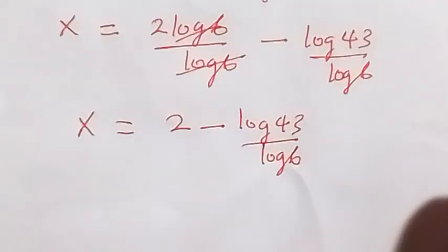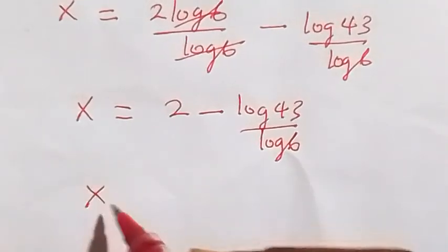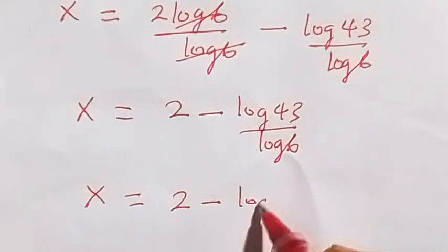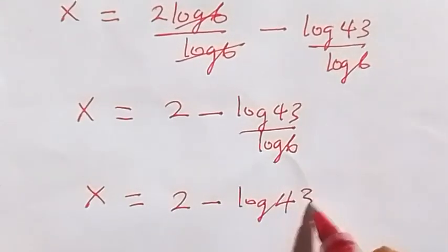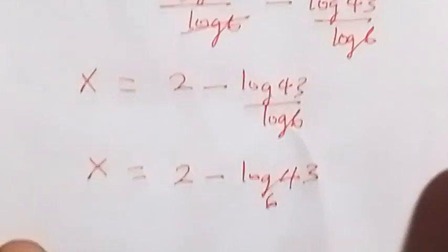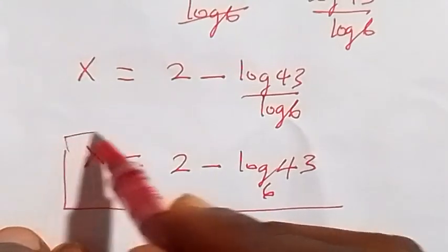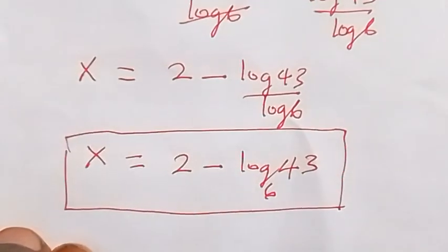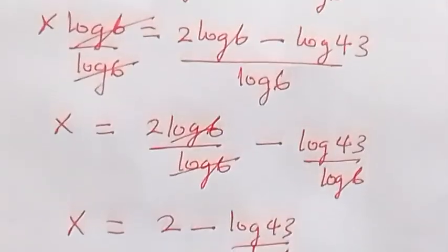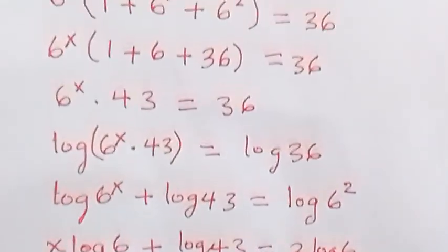From here we can also write this again using the change of base formula, and this will be x equals to 2 minus log 43 base 6. So here we have the final answer to this problem, which is x equals to 2 minus log 43 base 6. Thank you for watching, please share this video, subscribe to my channel and turn on the notification bell.